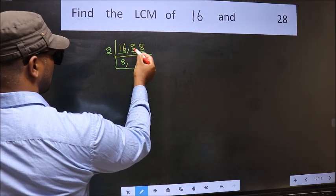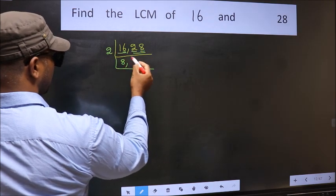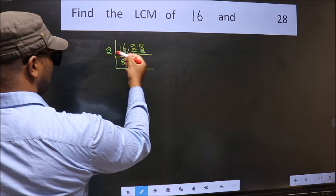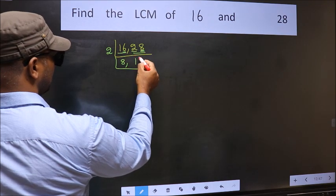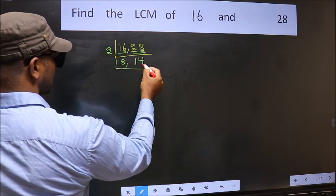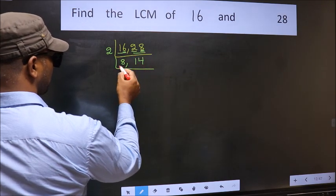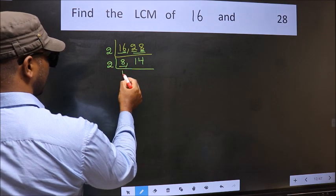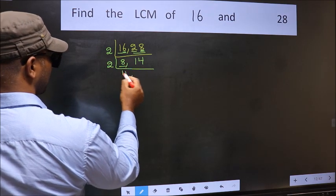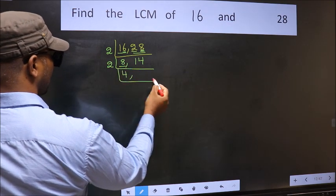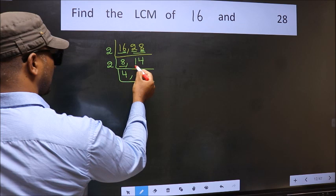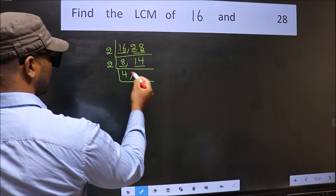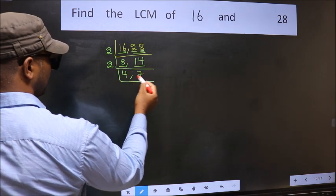First number 2: when do we get 2 in the 2 table? 2, 1, 2. The other number 8: when do we get 8 in the 2 table? 2, 4, 8. Now here we have 8. 8 is 2, 4 is 8. The other number 14: when do we get 14 in the 2 table? 2, 7 is 14.